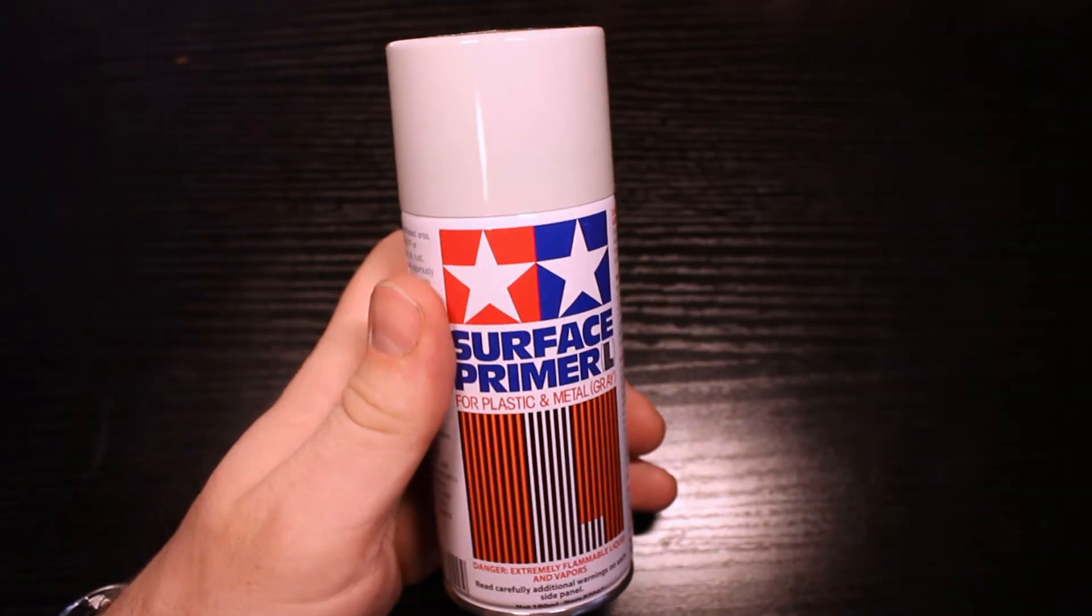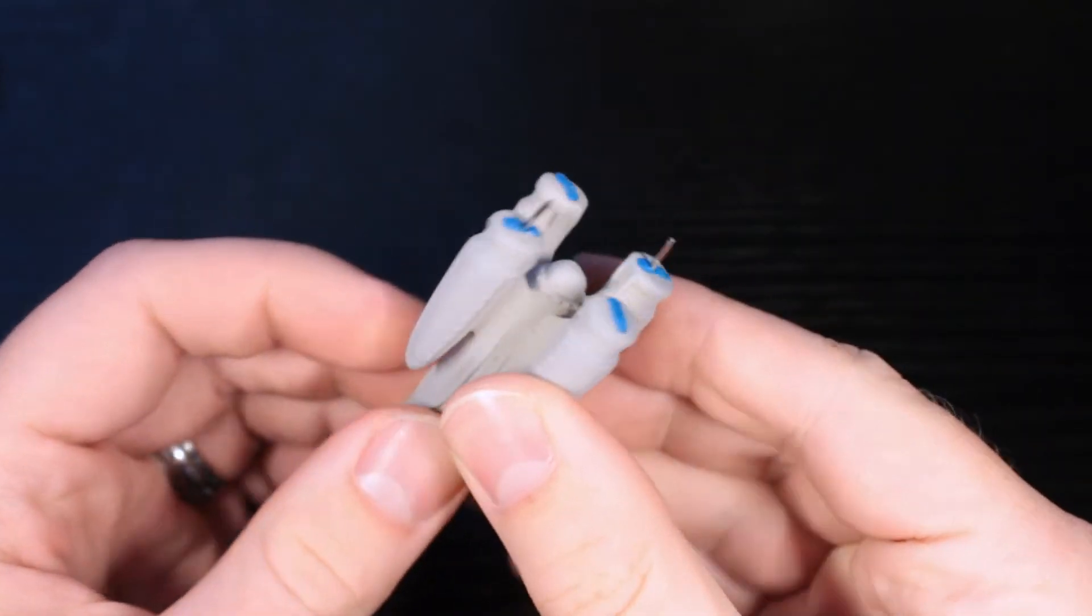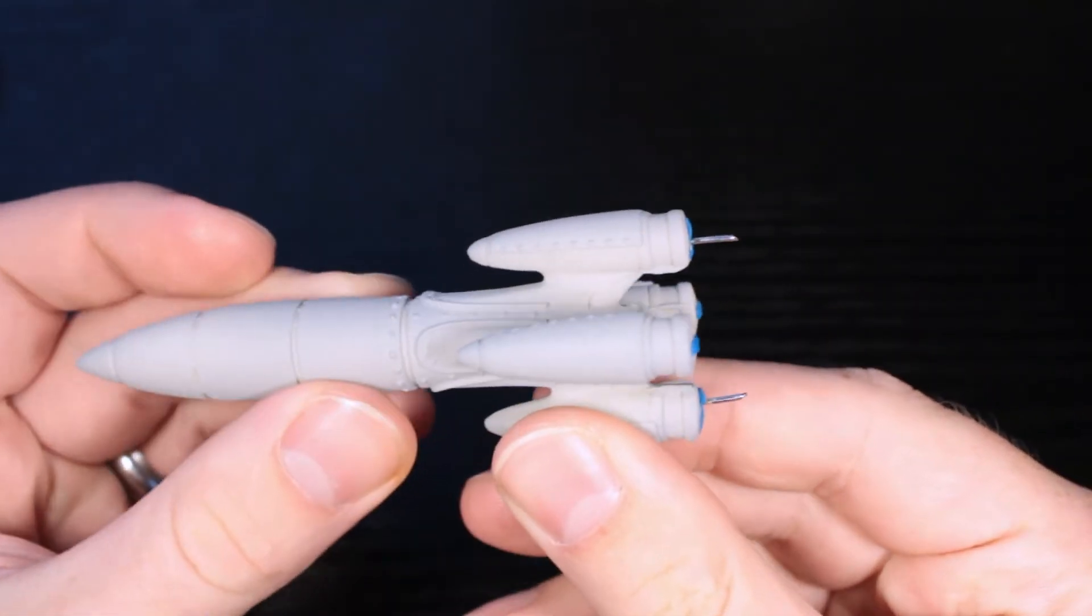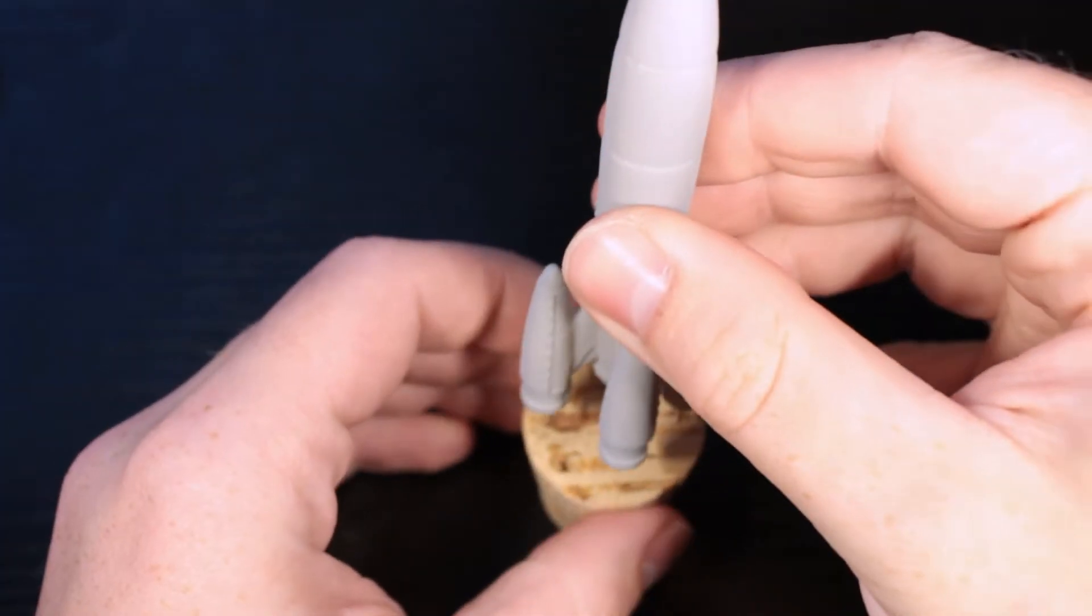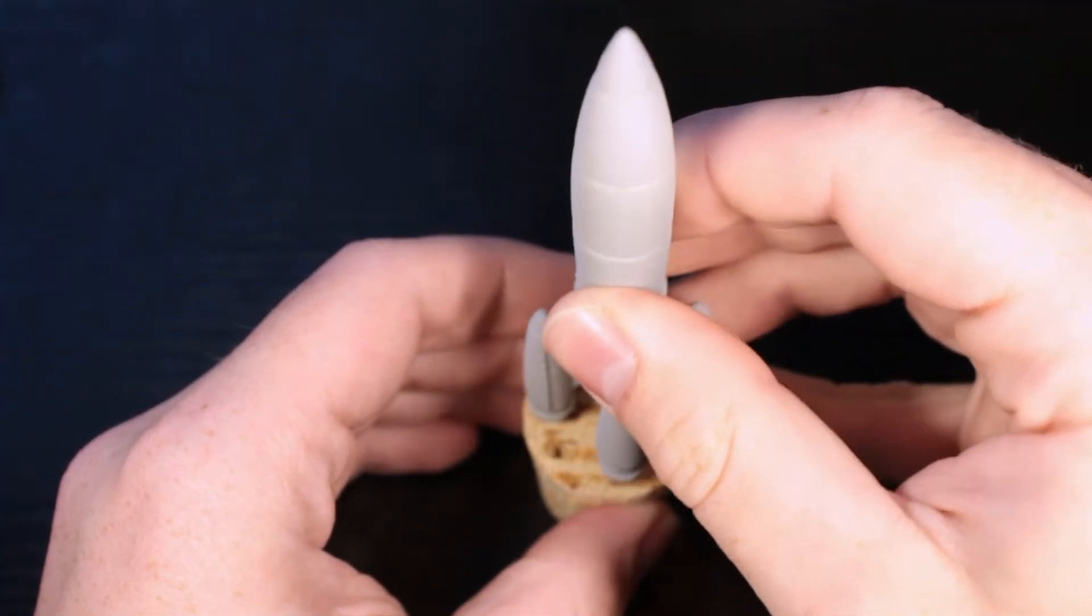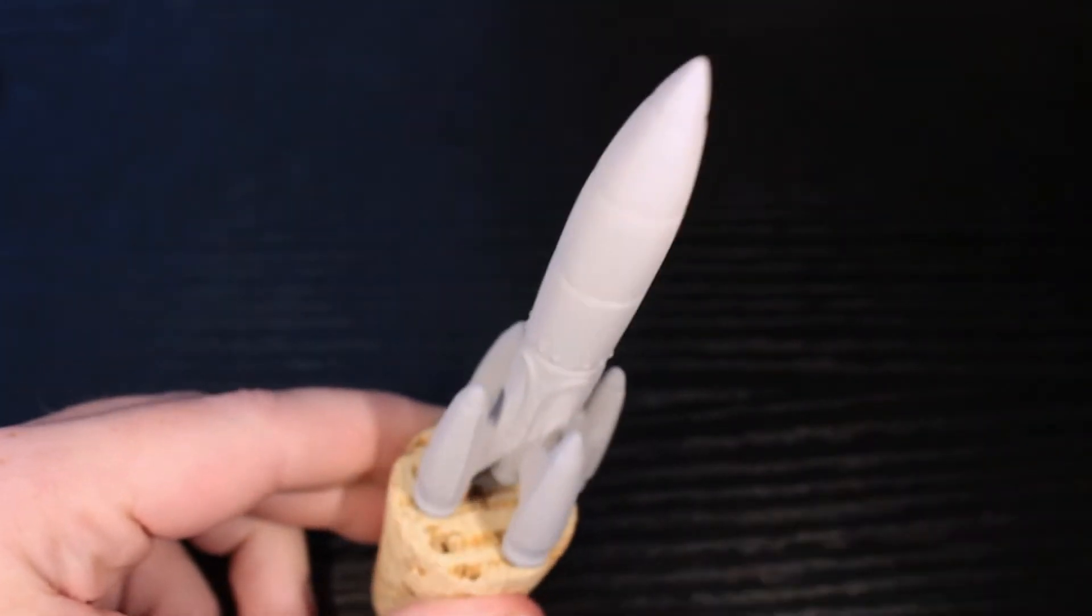As always, we prime miniatures, so I'm using a grey primer, it's the standard primer I typically use. I'll do white if I'm painting very bright, otherwise my go-to is grey. That way I can do some highlights, I can do some dark colors, and I don't have to... If you've ever tried to paint yellow on black primer, don't, it's stupid, so don't do that.